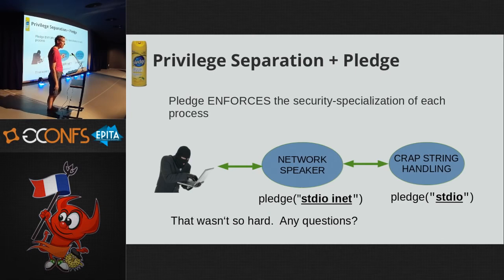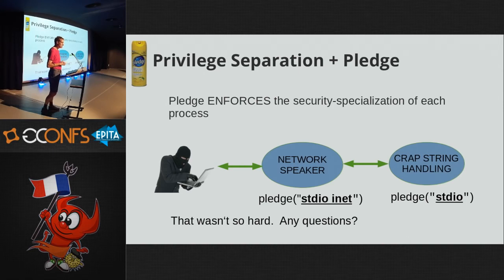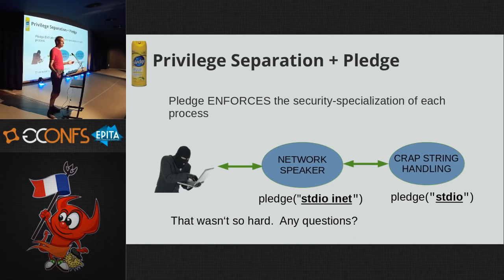This finally allows us to apply enforcement to the design we had before. The crappy string-handling process with a pledge of standard IO can only read or write back toward its network speaker. Standard IO includes calls like read and write, enough to do mmap and the fundamentals for continued operation of a process, without giving any ability to allocate new descriptor resources. You cannot receive file descriptors — you can only act upon what you already have. That's not hard. We had 50 new developers show up and send pledge patches for programs — it was easy for them to do and they were very satisfied.